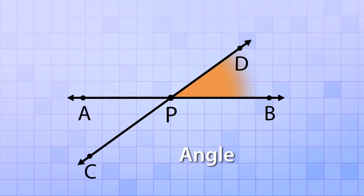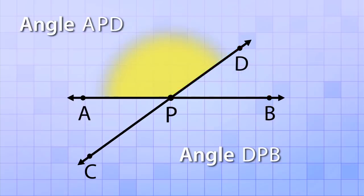this angle here can be called angle DPB because if you trace along those points, like connect the dots, they outline that angle. And this angle here, we can call that angle APD because connecting those dots forms that angle.